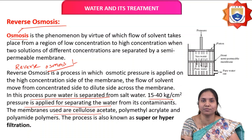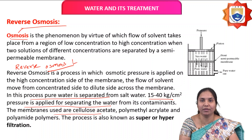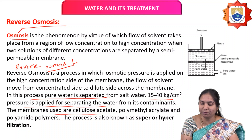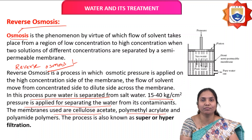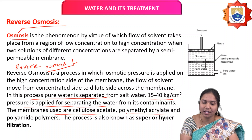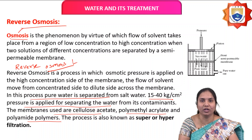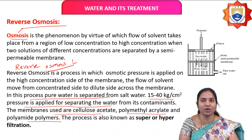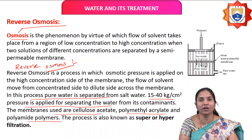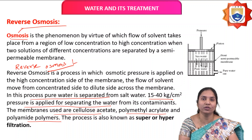The semipermeable membrane used in reverse osmosis is generally made of cellulose acetate, cellulose butyrate, polymethyl acrylate, or polyamide polymers. This process is also called superfiltration, hyperfiltration, or electrodialysis.